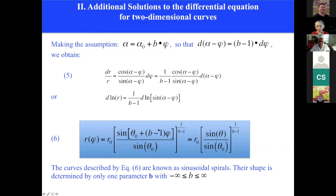And then we obtain the so-called sinusoidal spirals. This is a class of curves which are simply determined by one parameter B. That parameter can be varied from minus infinity to plus infinity, so you can choose all kinds of crystal curvatures just by varying one parameter.